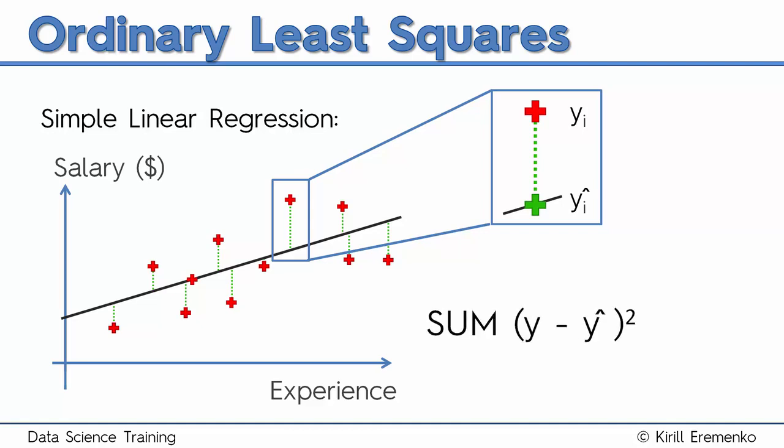To get this best fitting line, what is done is you take each one of those green lines or distances, square them, and then take the sum of those squares. Once you have the sum of the squares, you've got to find the minimum.